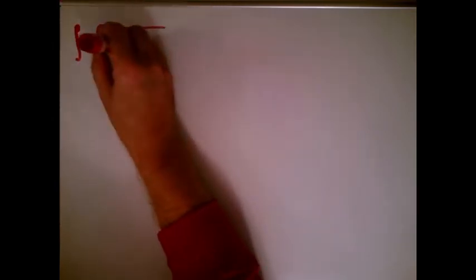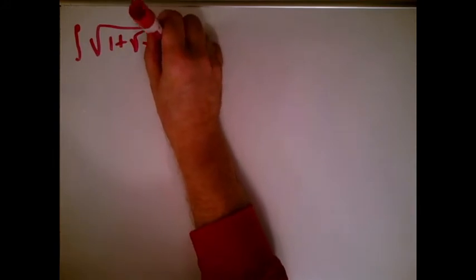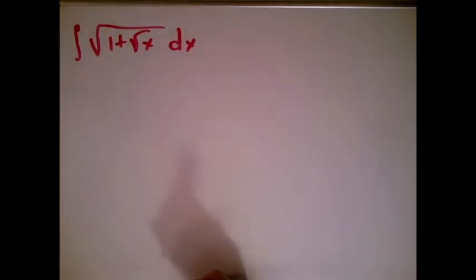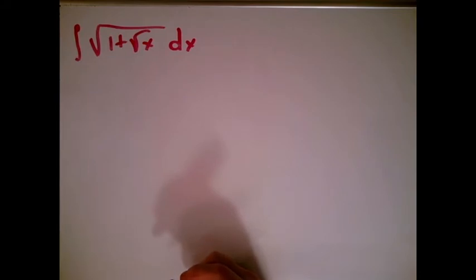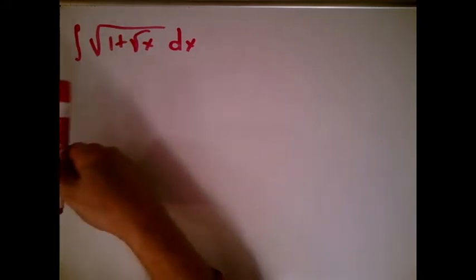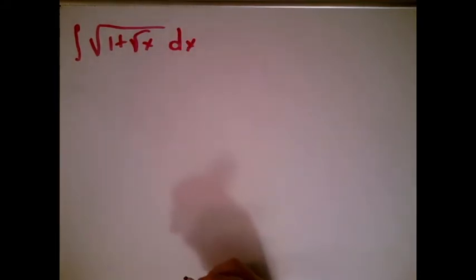We're going to do one that looks simpler. The one we're going to do is going to look like integral of the square root of 1 plus square root of x dx. We can't do this one by guessing check. The reason being is that the inside function, the blob, would be 1 plus square root of x. The derivative of the blob would be 1 over 2 square root of x, and there's nothing like that here, so guess and check won't work.